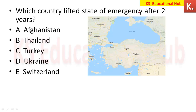Which country lifted the state of emergency after two years? Turkey lifted its state of emergency. Turkey's capital is Ankara and its currency is the Lira.